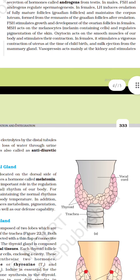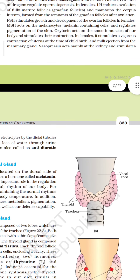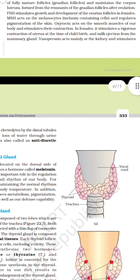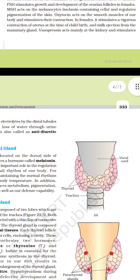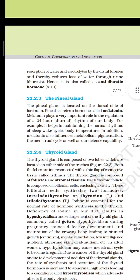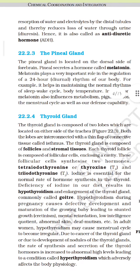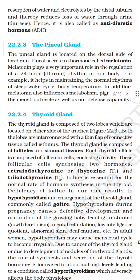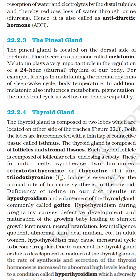Oxytocin acts on the smooth muscles of our body and stimulates their contraction. In females, it stimulates vigorous contraction of the uterus at the time of childbirth and milk ejection from the mammary gland. Vasopressin acts mainly on the kidney and stimulates reabsorption of water and electrolytes from the distal tubules, thereby reducing loss of water through urine, i.e. diuresis. Hence, it is also called antidiuretic hormone, ADH.